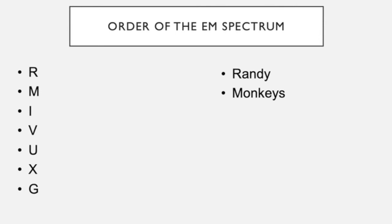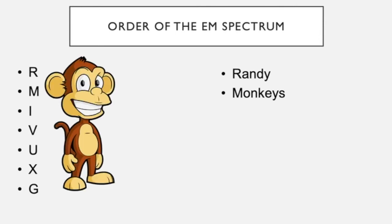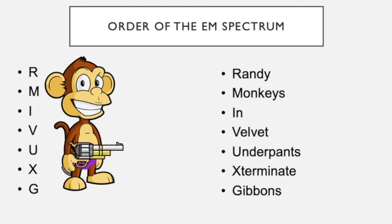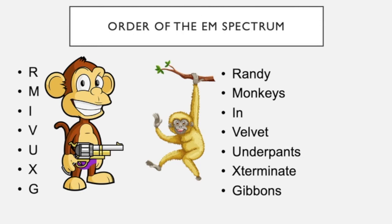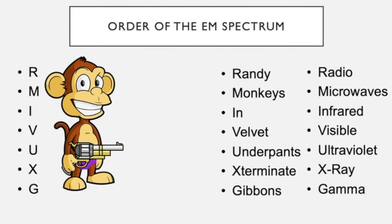So this is the order and so we start off with Raundy Monkeys. So here we've got a raundy monkey and he is in velvet underpants and he's exterminating, I know that doesn't quite work but he is exterminating with the X there, a gibbon. So Raundy Monkeys In Velvet Underpants Exterminate Gibbons: radio, microwave, infrared, visible, ultraviolet, x-ray, gamma.